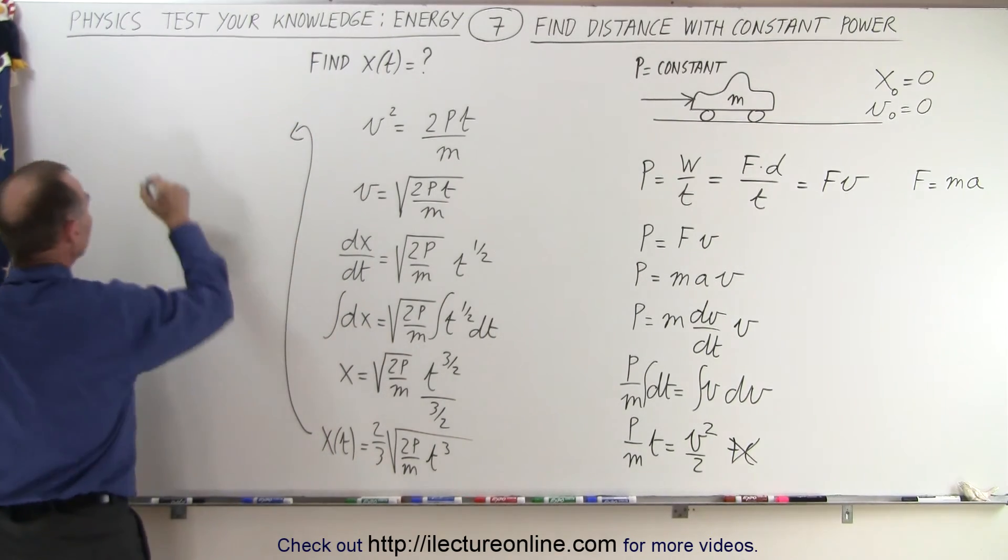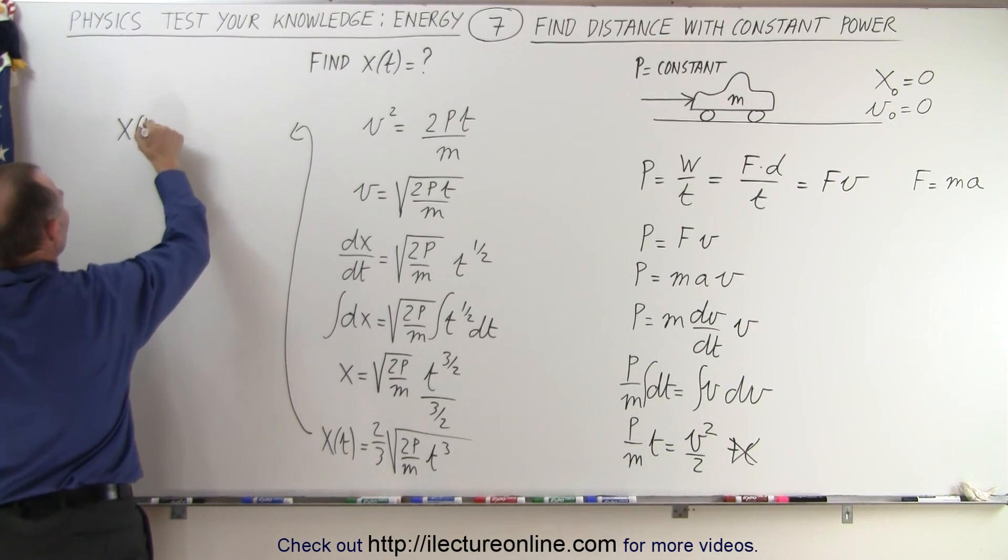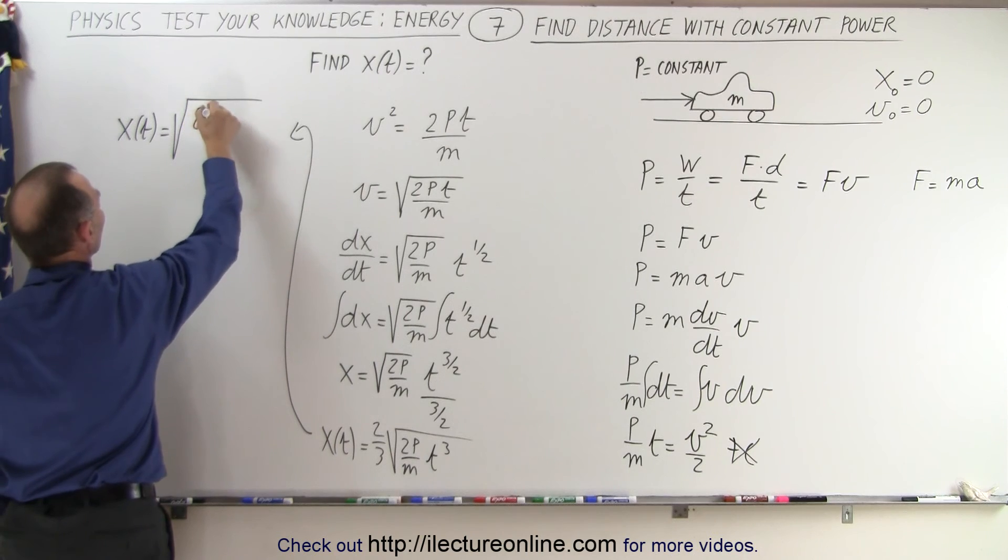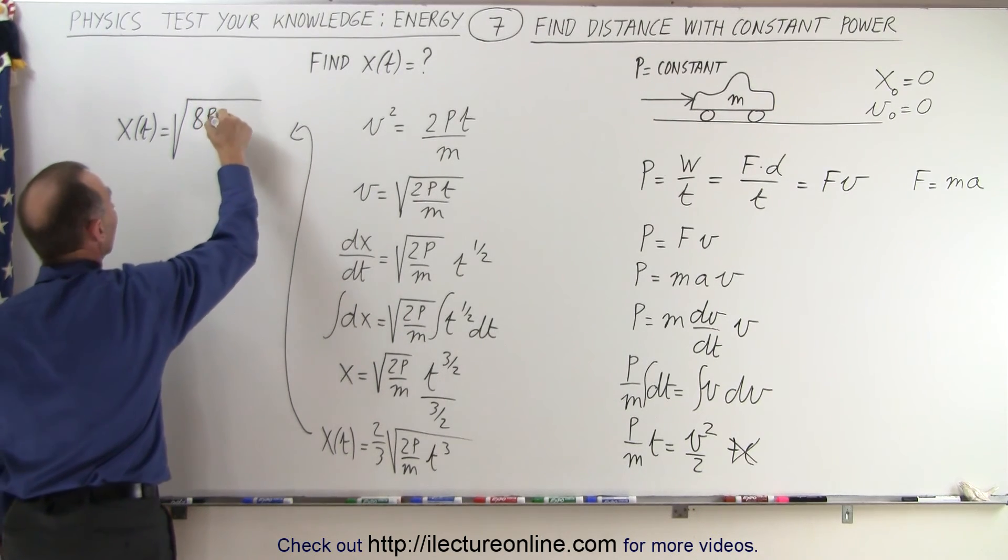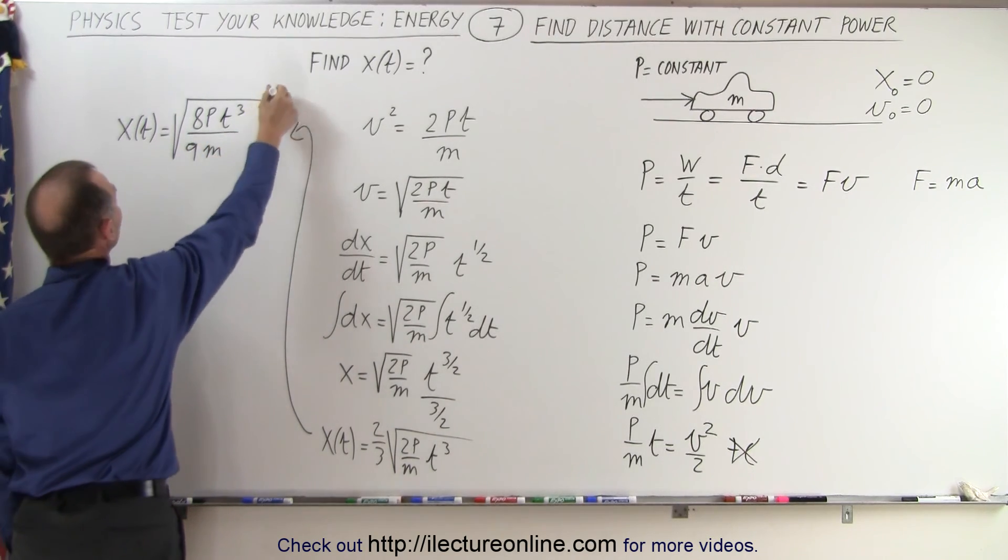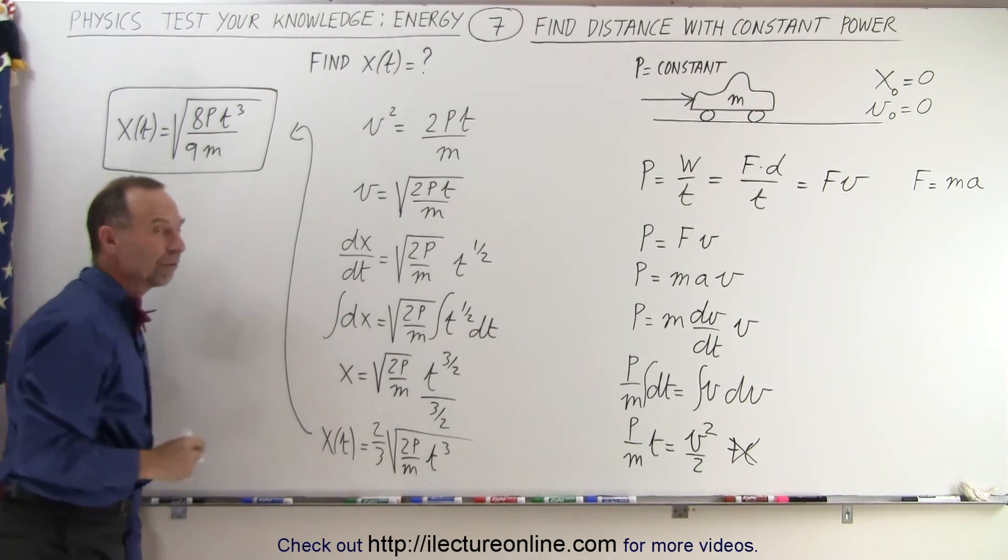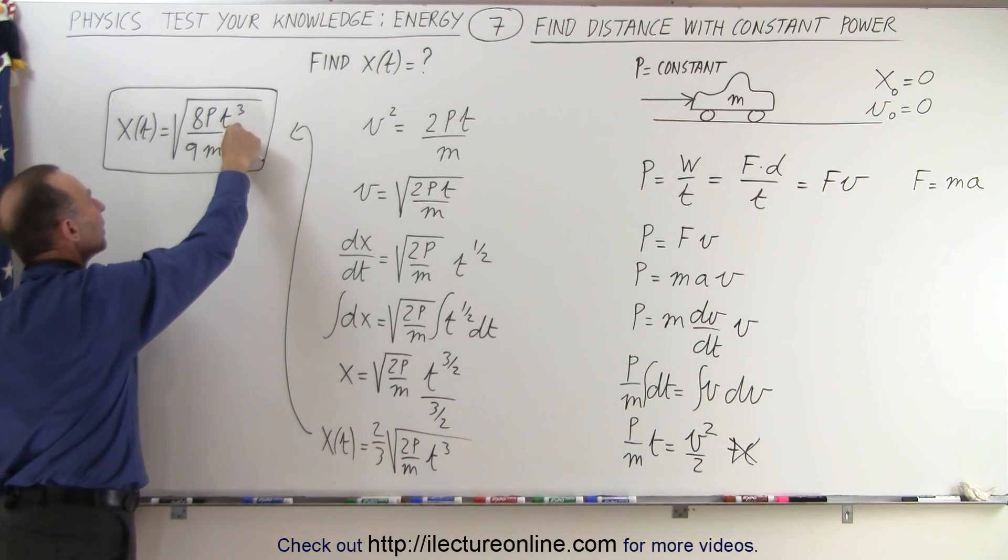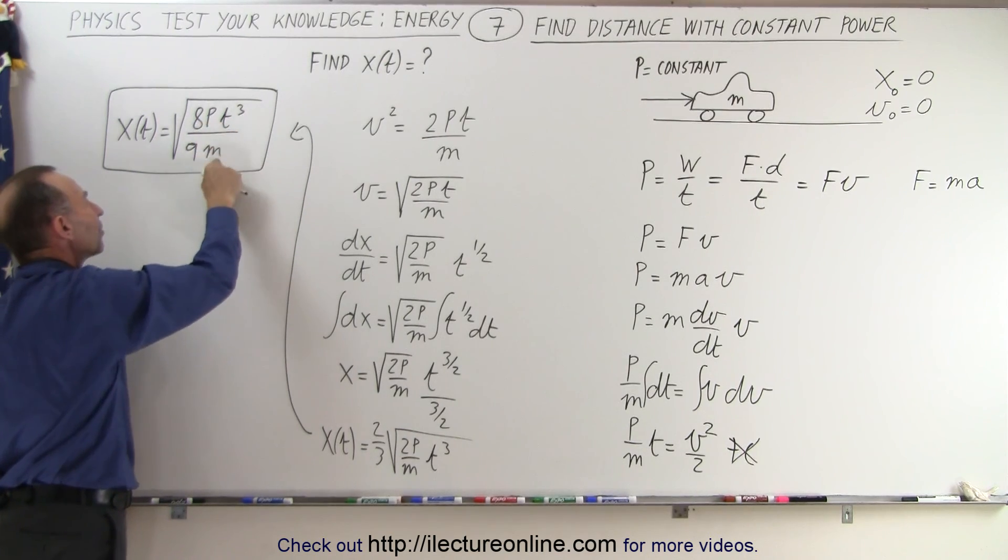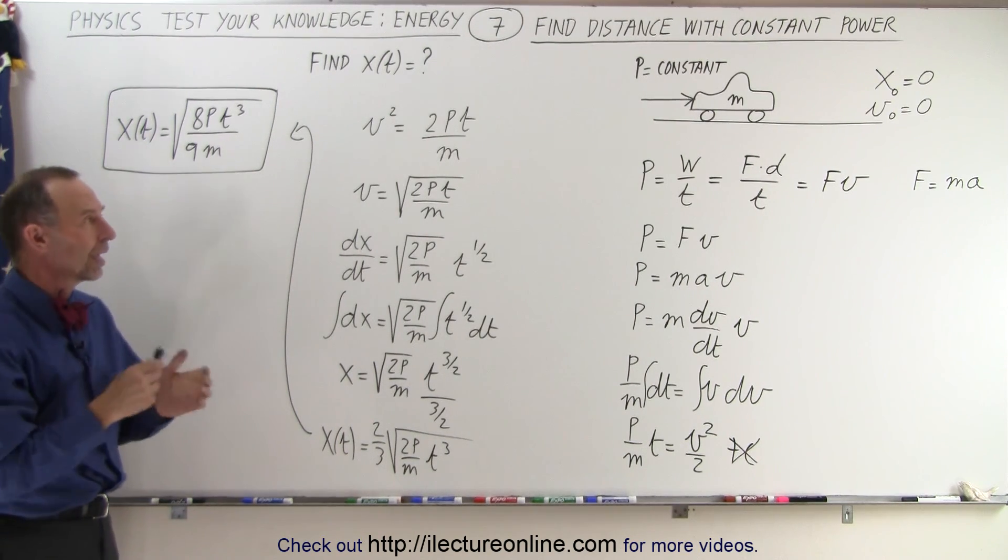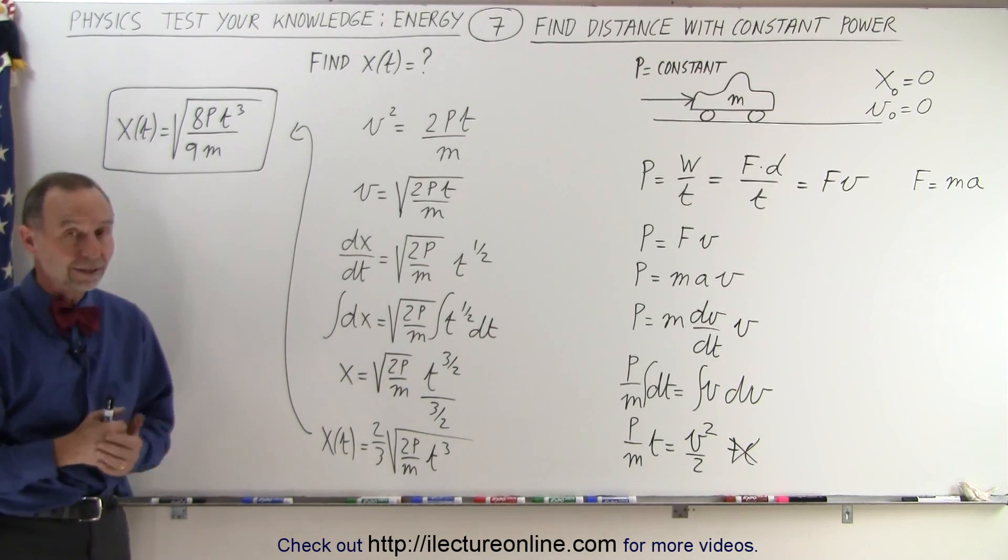So finally, we can put everything underneath the radical. We can say that x as a function of time can be written as the square root of 8Pt³/9m. I think that's it. And this would be a good expression for the position as a function of time. All we need to do is plug in time. We know that P is a constant, m is a constant, and it'll tell us the position of the car starting at x equals 0 when time equals 0. And that is how it's done.